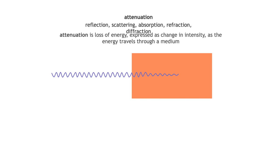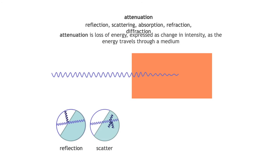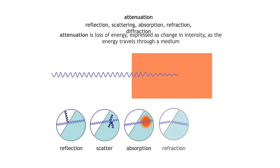Reflection is just one way energy is lost as ultrasound travels through the body — this energy loss is known as attenuation, defined as the loss of energy (change in intensity) as it travels through a medium. Types of attenuation include: reflection (bouncing back, mirror-like or as backscatter), absorption (direct energy transfer to tissues creating local heating), refraction (change of direction at a tissue interface), and diffraction (divergence or spreading out of the beam as it travels).